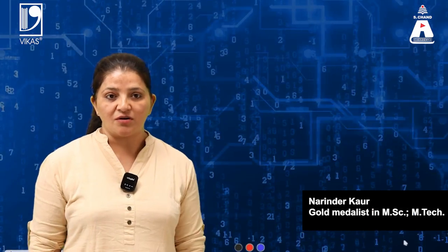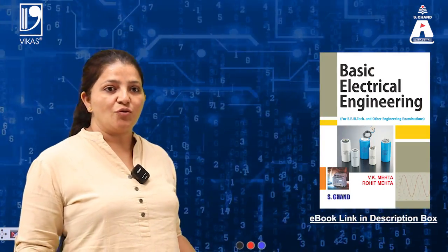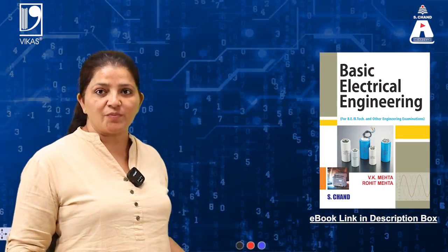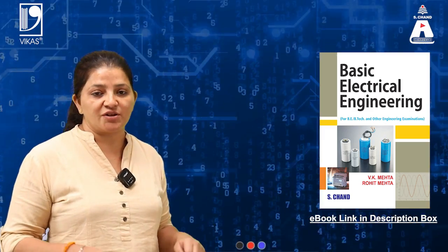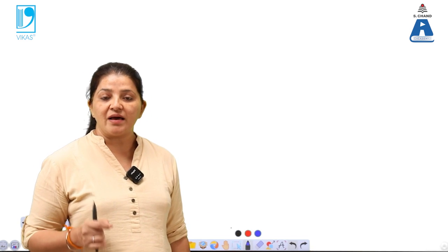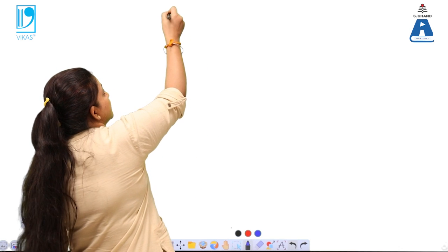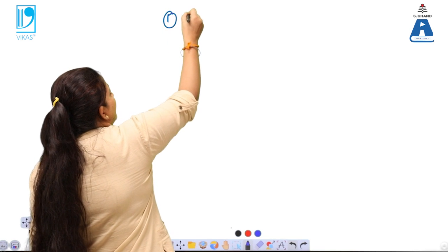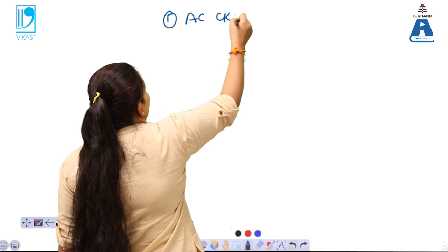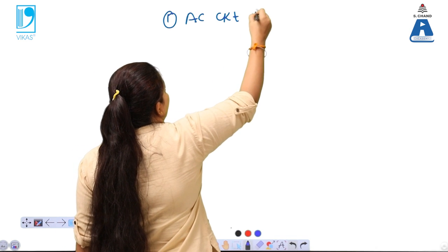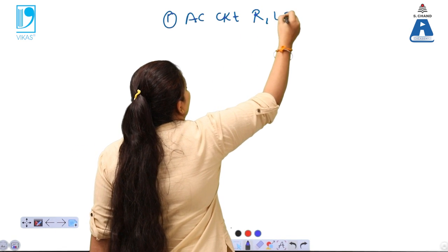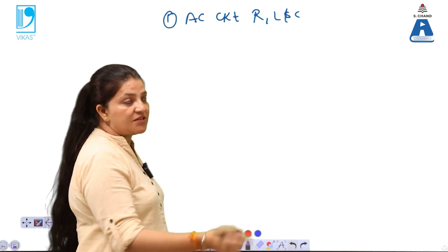I am Narendra Kaur. If you want to study all these topics in detail, you can refer to this book from S-chan publishing — the link is also given in the description box. We will study about when R, L, and C are present in series combination. The first topic is an AC circuit which contains a combination of R, L, and C in series.